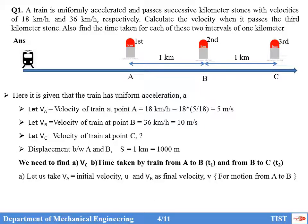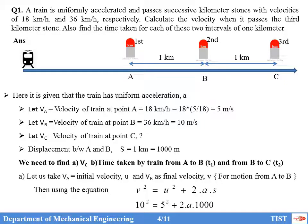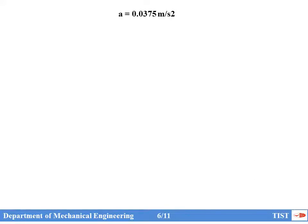For motion from A to B, VA is initial velocity U and VB is final velocity V. Since time is not given, we use the third equation: v² = u² + 2as. So 10² = 5² + 2A × 1000. Solving this gives acceleration A = 0.0375 m/s².